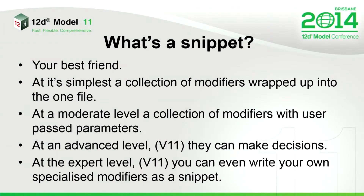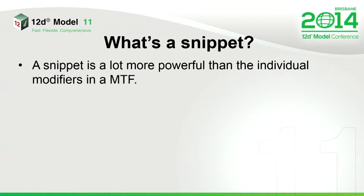And then we've got the expert level. At the expert level now in D11, with that medium barrier that Peter just showed you, you can write snippets that have the intelligence to do all that themselves. They can do mathematics, they can do all sorts of things. There are probably four levels of snippets, and users should be able to work their way through an introduction to all of them. Snippets are a lot more powerful than the individual modifiers, especially in D11. There are things you can do in snippets now that you cannot do via normal modifiers.